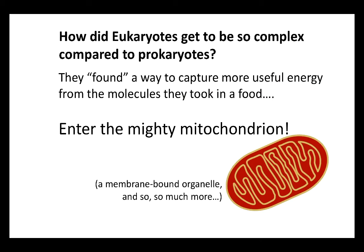All living things use the ATP-ADP cycle as a way of paying for work in the cell. We still haven't addressed how eukaryotes got to be more complex — where did they get all this extra energy currency, this extra money to pay for their fancy structure?